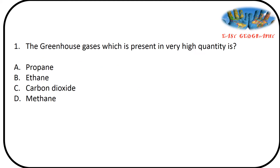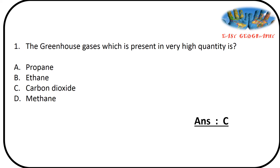First question: which greenhouse gas is present in very high quantities? Options: propane, ethane, carbon dioxide, methane. Answer is option C, carbon dioxide — 76%. Among the greenhouse gases, 76% is carbon dioxide, methane 16%, and nitrogen dioxide 6%.